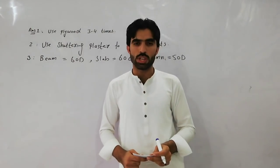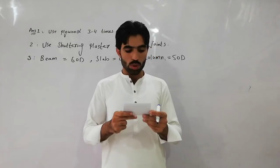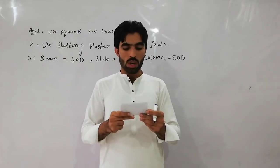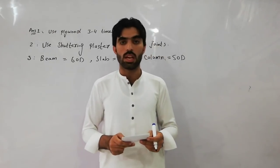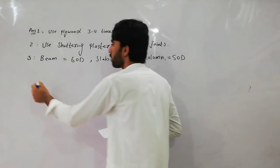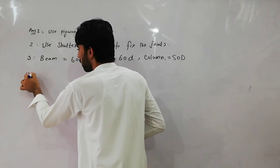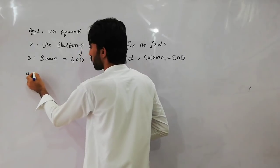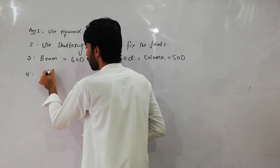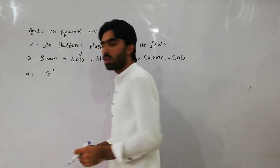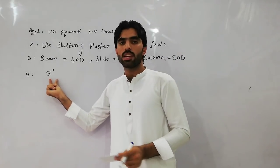For column, use 50d, where d is the diameter of the steel you are using in your building structure. Question number four: what is the minimum thickness of the slab? The answer is five inches — the minimum thickness of the slab is five inches.